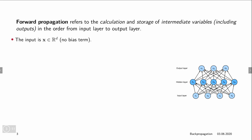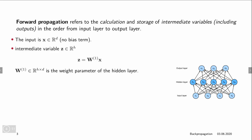For this network, we start out by computing, given the input vector x — which is d-dimensional — an intermediate variable z, which is given by a linear function in x. So we take x and multiply it by a weight matrix W1, which is h times d. By multiplying x with W1, we get the h-dimensional vector z.